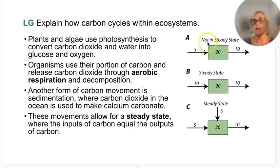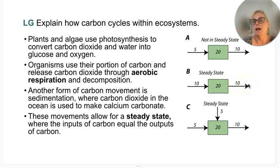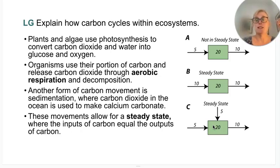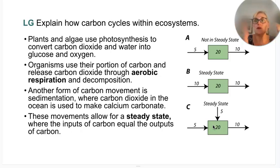If you have five pieces of carbon moving in but ten coming out, that's not in steady state. But if you have ten in and ten out, that is steady state. What we have in the world right now is we are not in steady state since the industrial revolution. When we started digging up fossil fuels and burning them, we are no longer in steady state. Before the industrial revolution in the 1700s, all animals and producers on the planet had roughly equal inputs and outputs of carbon.